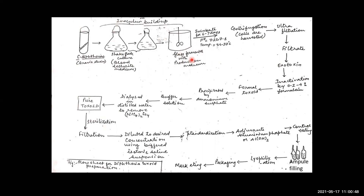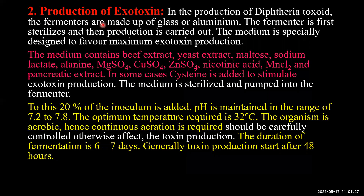Once sufficient amounts of Corynebacterium diphtheriae culture are ready in the main fermenter, the organism secretes the exotoxin outside the cell — it is an exotoxin, meaning it is present in the broth medium. After sufficient growth has occurred, bacterial cells are separated from the broth by centrifugation. Cells are harvested and removed, leaving the exotoxin in the liquid phase.